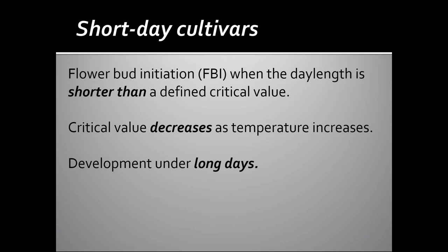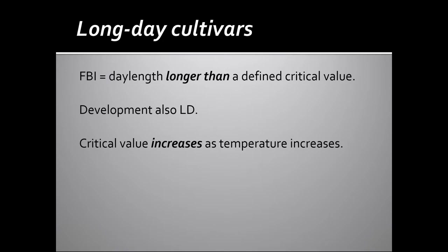The actual development of the flower cluster takes place under long days. For long-day cultivars, flower bud induction and initiation occurs when the day length is longer than some critically defined value. Development also occurs under long days. The important concept here is that the critical value of day length increases as the temperature increases. So as the days get warmer, the day length must become longer in order for flower buds to form in a long-day cultivar. So in short-day cultivars, that critical photoperiod gets shorter as the days get warmer, and in long-day cultivars, that critical photoperiod gets longer as the days get warmer.